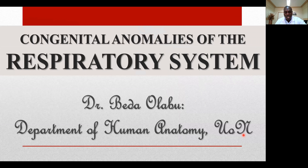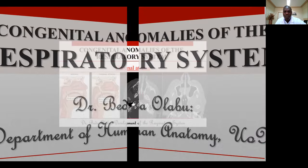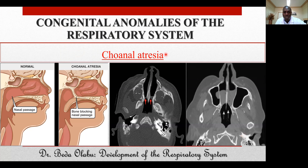Now we look at congenital malformations of the respiratory system. Choanal atresia means blockage of the choana — the passage from the nasal cavity to the pharynx is blocked. A child with choanal atresia cannot breathe normally through the nose and must breathe through the mouth. Images show the membranous obstruction between the nasal cavity and nasopharynx.